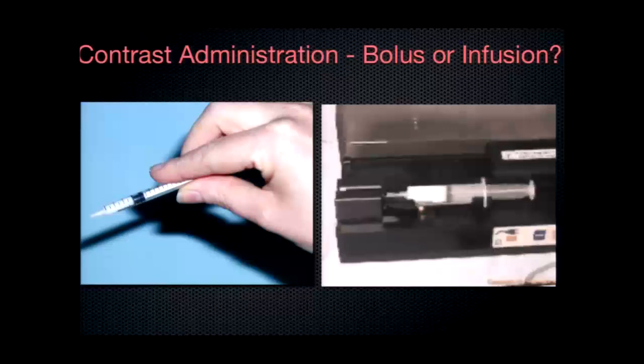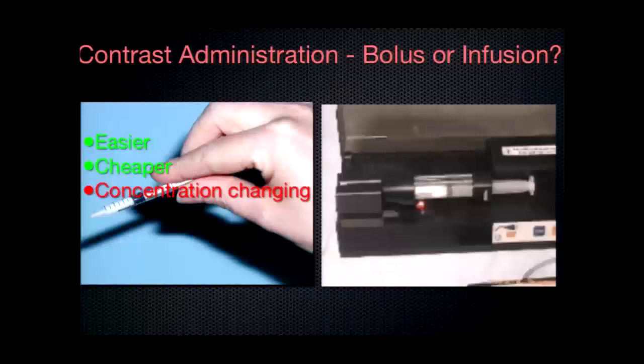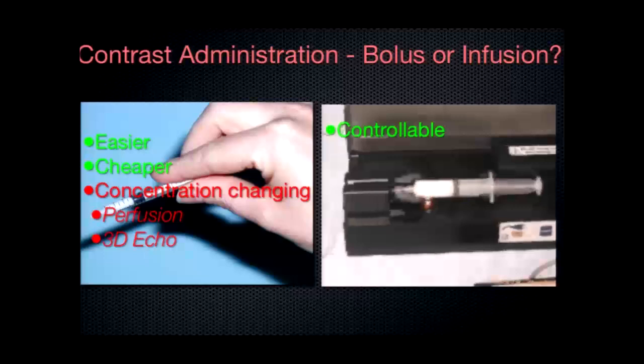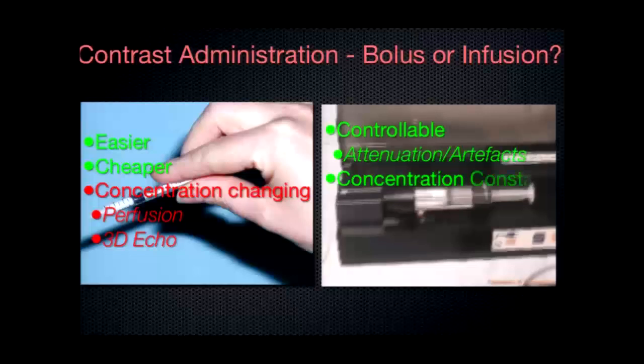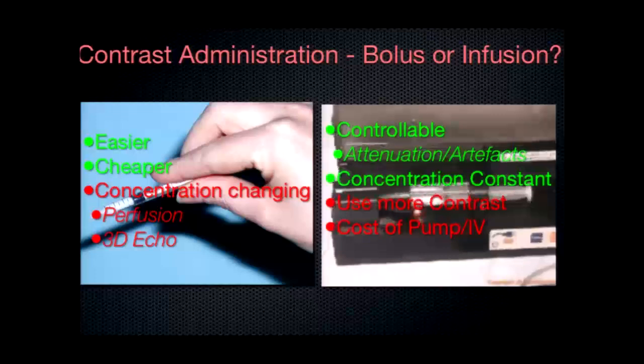Now, the other thing that we have to consider is how we actually administer these contrast microbubbles, and we can use either a bolus or an infusion. In our lab, certainly giving a bolus is easier and it's cheaper because you use less contrast, but the concentration is changing all the time. It doesn't work well for perfusion or for 3D echo. So an infusion can be given through a dedicated pump, as you can see here, or else you can do it through an IV. It's more controllable. You can help reduce the effects of attenuation and artifacts. The concentration you can maintain has been constant over a long period of time, which makes it more suitable for MCE and for 3D. But you do end up using more contrast, and of course you have the cost of the pump and the IV as well.